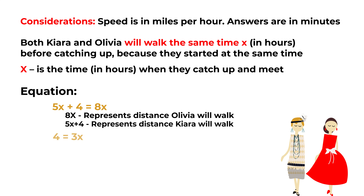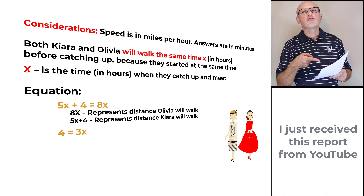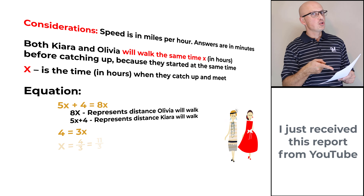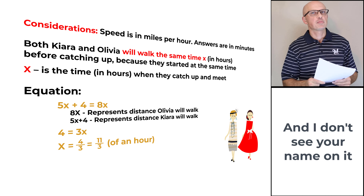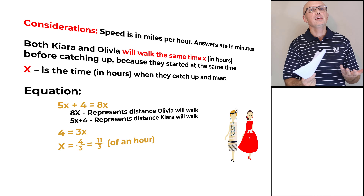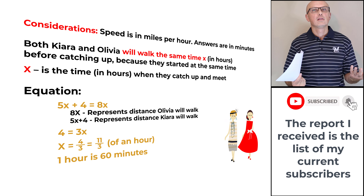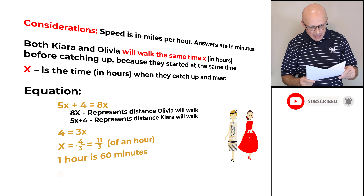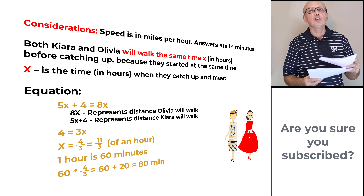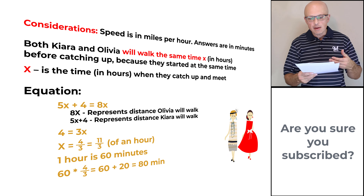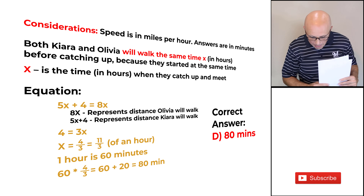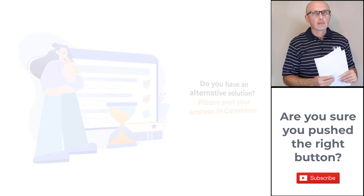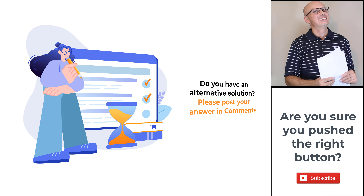Simplifying the equation: 4 = 3x, so x = 4/3 hours, which is 1 and one-third hours. Converting: 60 × (4/3) = 80 minutes. The correct answer is choice D, 80 minutes. Hopefully you've nailed this question and now know how to answer similar problems on the test.